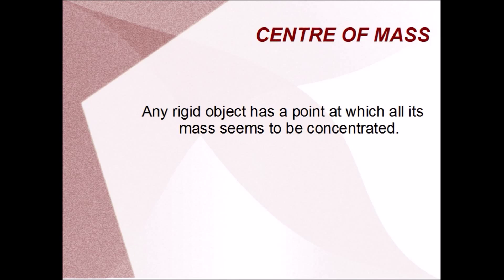Here's how it is. For any rigid object, you can find a point at which the object's mass appears to be concentrated. In other words, you can treat the object as if all its mass is in one place. That point is the center of mass.